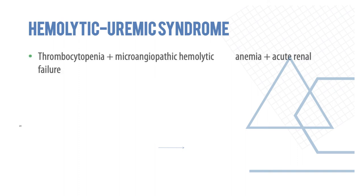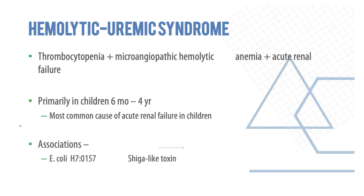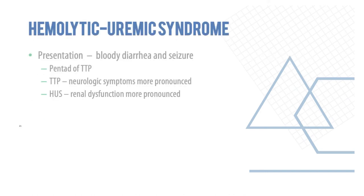Hemolytic uremic syndrome (HUS) involves thrombocytopenia and hemolytic anemia along with renal failure. It is usually seen in children six months to four years old and is the most common cause of acute renal failure in children. It is associated with E. coli H7:O157, also known as a shiga-like toxin. Presentation is in the form of bloody diarrhea and seizures.